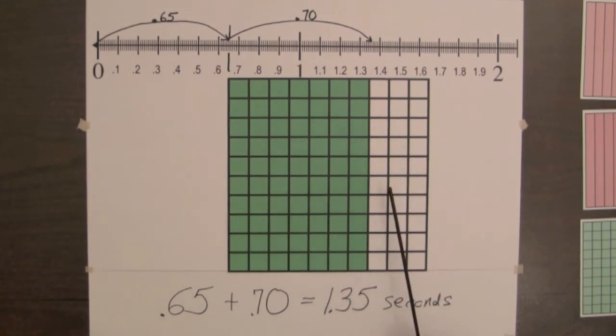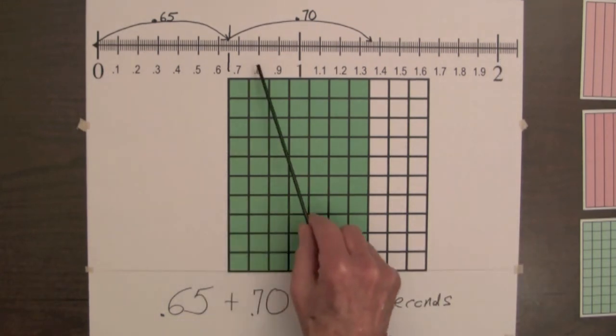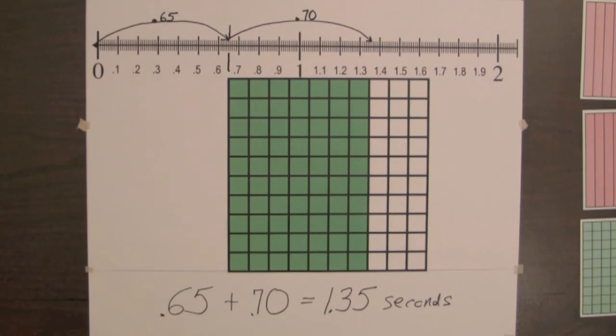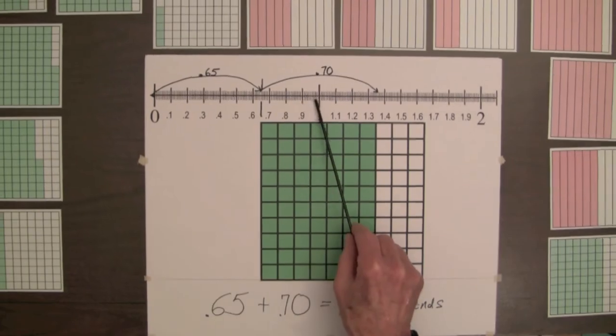The decimal square is a region model showing the whole unit and equal parts of the unit. The number line is a linear model, and the unit from zero to one is divided into ten equal parts — and in this case for the hundredths line, into a hundred equal parts. You have seen the visual decimal squares model connected to both place value tables and number lines for adding decimals. All too often, connections between different models for adding decimals are not shown.